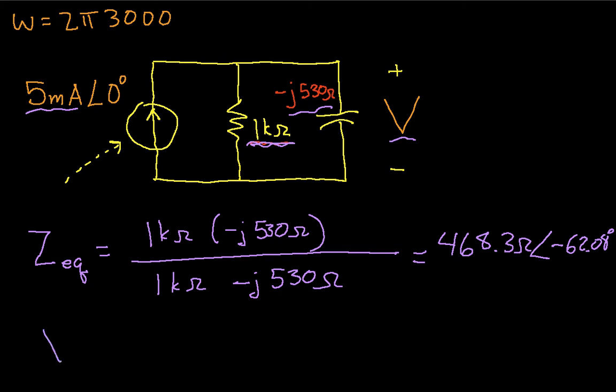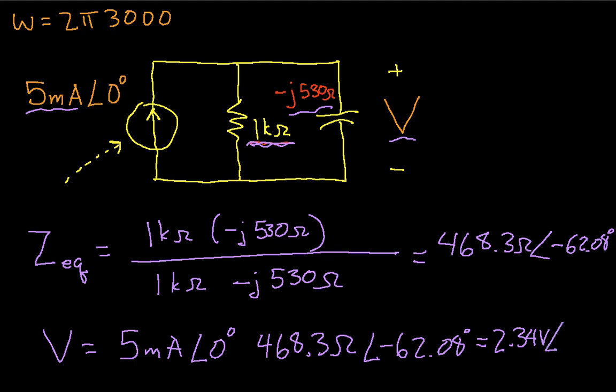And then we can get that the voltage is going to be our source current, 5 milliamps at an angle of 0 degrees times the equivalent impedance, which is 468.3 ohms at an angle of minus 62.08. And when we work this out, we find that this is equal to 2.34 volts at an angle of minus 62.08 degrees. So what we found then is that this voltage is 2.34 volts at an angle of minus 62.08 degrees. That completes step 3. We now have the phasor representation of the voltage that we were trying to compute.